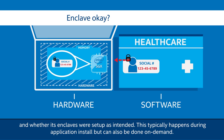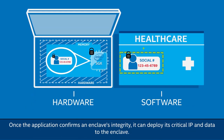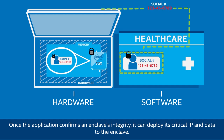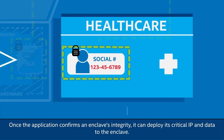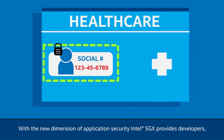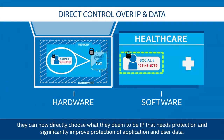This typically happens during application install, but can also be done on-demand. Once the application confirms an enclave's integrity, it can deploy its critical IP and data to the enclave. With the new dimension of application security Intel SGX provides developers, they can now directly choose what they deem to be IP that needs protection and significantly improve protection of application and user data.